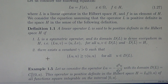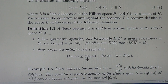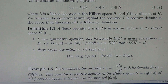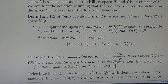Second condition: there exists a positive constant gamma such that the inner product of LU with U is greater than or equal to gamma times the inner product of U with U, for all U in the domain of the operator. Let us clarify the conditions of the definition using the following example.